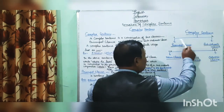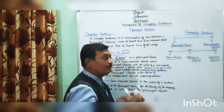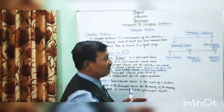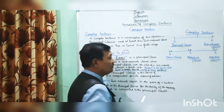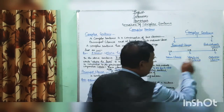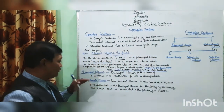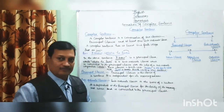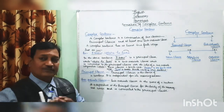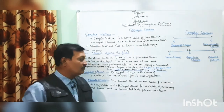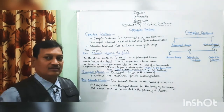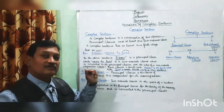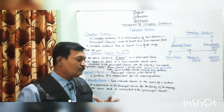A complex sentence is made of two parts: a principal clause and a subordinate clause. There are three types of subordinate clauses: noun clause, adjective clause, and adverb clause. A subordinate clause is the part of a sentence that is dependent on the principal clause for the clarity of its meaning and sense. It is not free like the principal clause, that's why it is called a subordinate clause.